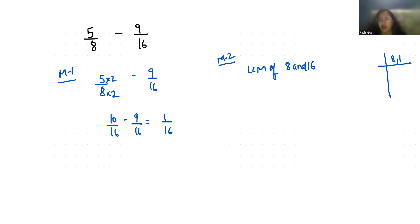8 divided by 2, so 8 comes at 4 place and 16 comes at 8 place. Again, 4 comes at 2 place and 8 comes at 4 place. Again we will divide by 2. We have to divide till we get 1. So 2 times 2 times 2 times 2 equals 16. So LCM of 8 and 16 is 16.